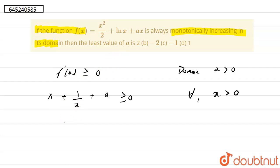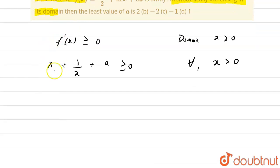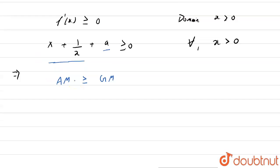So now we have to find the minimum value of this, so we can calculate the least value of a. If we use AM greater than or equal to GM, then if we take y equal to x plus 1 upon x,